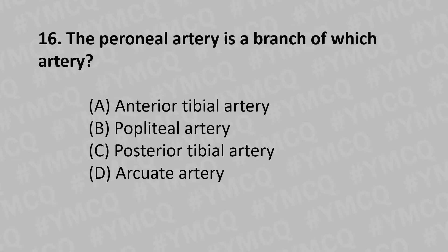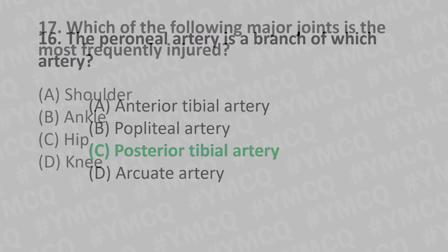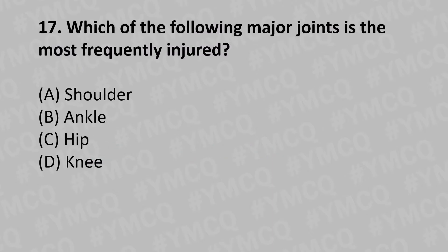Moving to our sixteenth question: the popliteal artery is a branch of which artery? Option A: anterior tibial artery, Option B: popliteal artery, Option C: posterior tibial artery. Moving to our seventeenth question: which of the following major joints is the most frequently injured? Option A: shoulder, Option B: ankle, Option C: hip, Option D: knee.